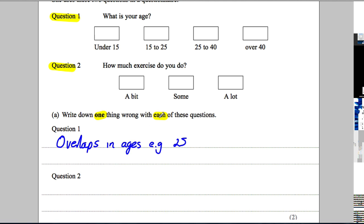Question 2, how much exercise do you do? A bit, some, a lot. Well, basically, there's quite a bit wrong with that one there. The first thing is it doesn't give you a time frame. It doesn't say a week, a month, a year, etc.